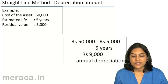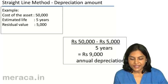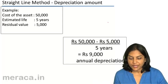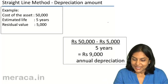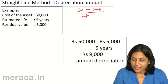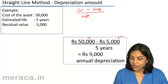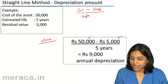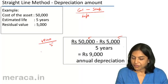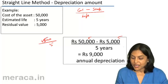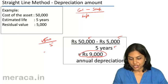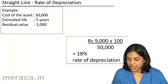Taking an example under the straight line method: suppose the cost of an asset is 50,000, the estimated life is 5 years, and the residual value is 5,000. The formula is: depreciable amount — cost minus scrap value — divided by the life of the asset. So 50,000 minus 5,000 equals 45,000, divided by 5 years, giving rupees 9,000 as the annual depreciation.